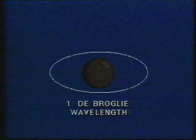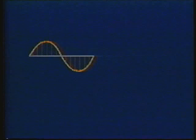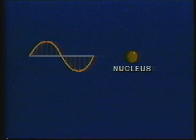De Broglie proposed that in the ground state or first energy level, the circumference of the electron orbit is one De Broglie wavelength. This single wavelength fits around the atom's nucleus at a distance that allows the wave to interfere with itself and form a stationary or standing matter wave.